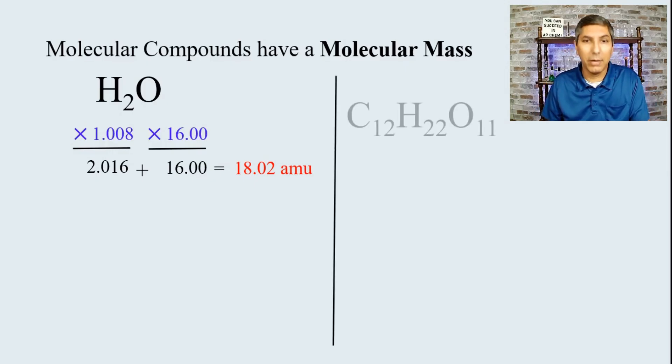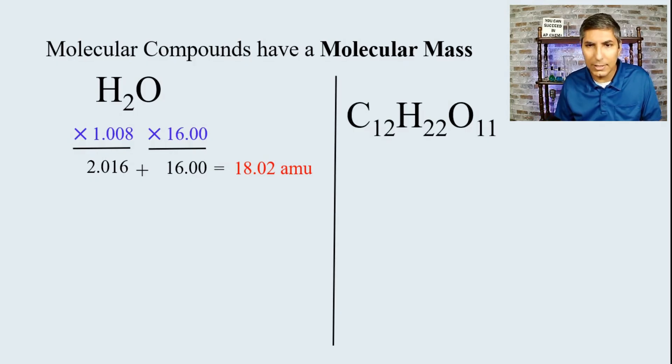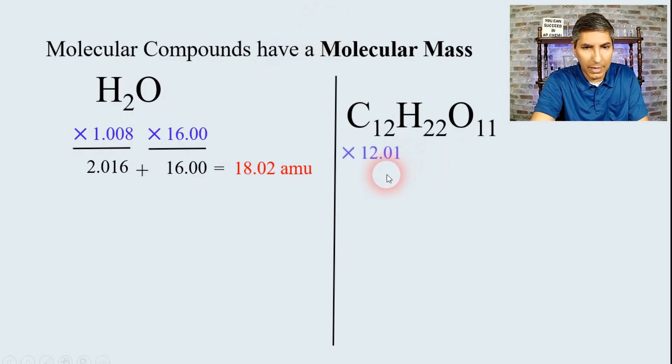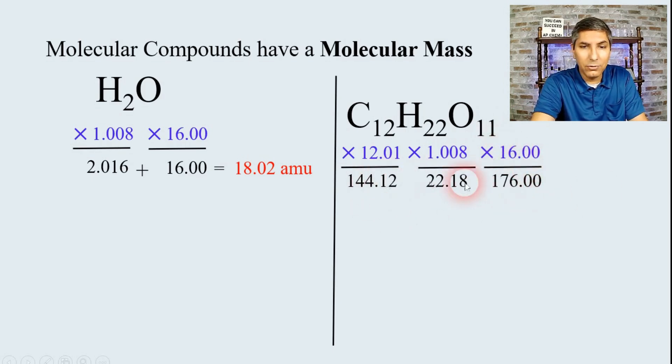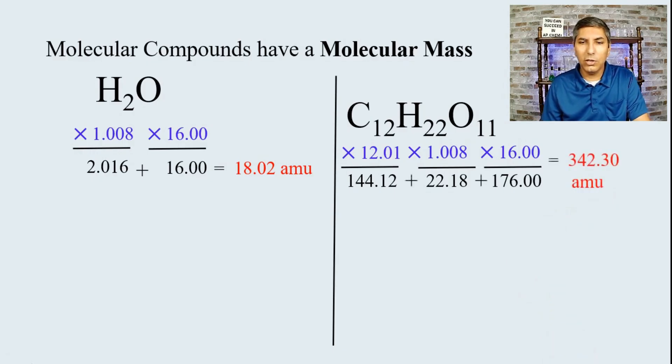And we can do this for other more complex molecules as well, like sucrose, table sugar. It has the formula C12H22O11. You know, carbon has the atomic mass of 12.01. We have 12 of those, and so we have that. We have 22 hydrogen atoms at 1.008 apiece, and we have 11 oxygen atoms at 16 apiece. When you add those together, we find that the molecular mass of sucrose, table sugar, is about 342.30 atomic mass units.